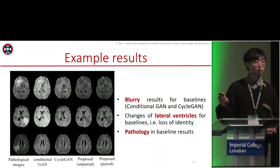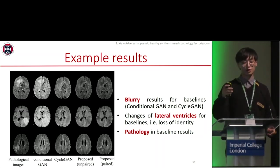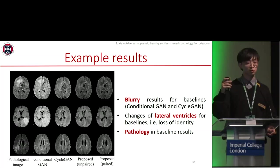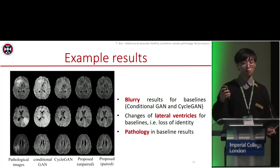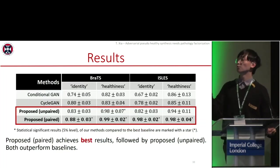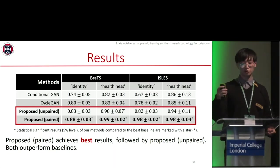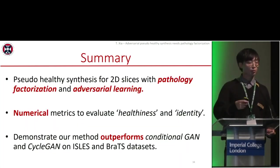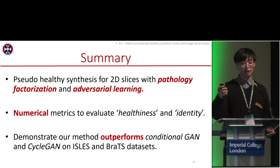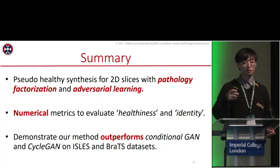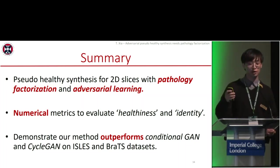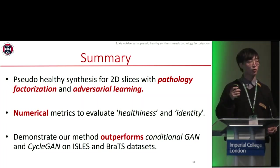We conclude that baselines produce blurry results and show changes in lateral ventricles, which is a signal of loss of identity, and we can observe pathology in some baseline results. The numeric results using our proposed metrics show that our proposed method trained in the paired setting achieves the best performance, followed by our method in the unpaired setting, both outperforming the baselines. In summary, we propose a pseudo-healthy synthesis method for 2D synthesis with pathology factorization and adversarial learning, and we also propose numeric metrics to evaluate pseudo-healthy image quality. We demonstrate that our method outperforms conditional GAN and CycleGAN.